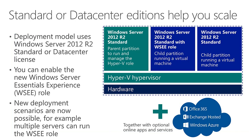Installing the Essentials Experience role with the Standard Edition really helps you scale beyond the 25-user limit. The architectural diagram looks the same: a parent partition used to run and manage the Hyper-V role with nothing else running in it, sitting on top of the Hyper-V hypervisor layer. But the Standard Edition license gives you two virtual machines — two guest operating systems. You can run one with the Windows Server Essentials role turned on for basic infrastructure services, and a second virtual machine for other workloads — all with just one license of Windows Server Standard. Data Center gives you as many virtual machines as you want.